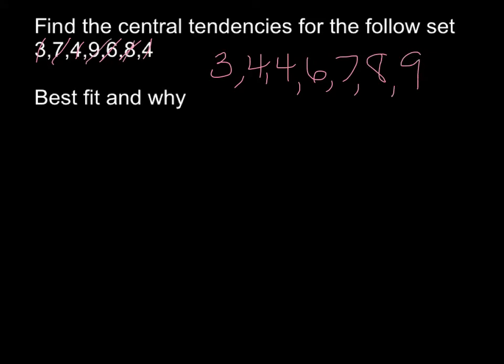Eight and nine. Okay, so the mean is the average. I want to add up all the numbers and divide by how many numbers I have. When I add those up, I get 41. And there's one, two, three, four, five, six, seven numbers. I'm just going to round to the nearest tenth. This is going to give me 5.9.